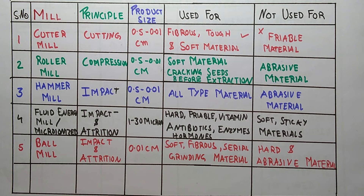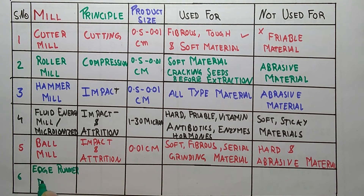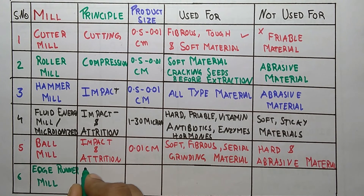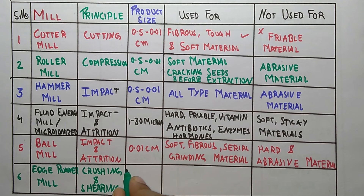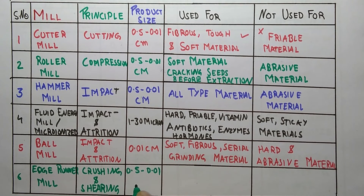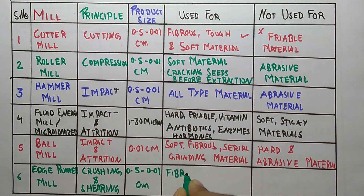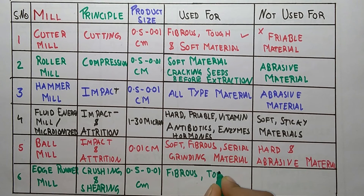The sixth and last one is runner mill. Its principle is crushing. The product size range is 0.5 to 0.01 cm. It is used for fibrous, tough, and sticky materials.